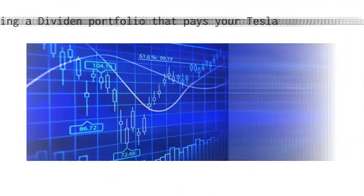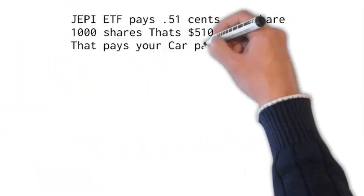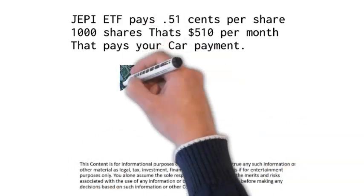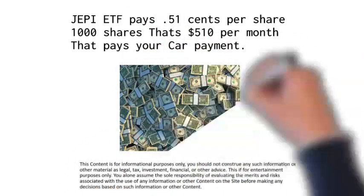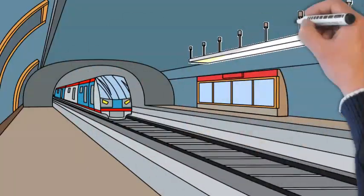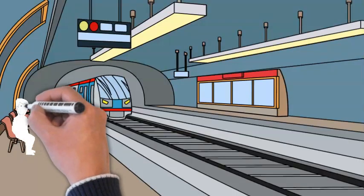Buy my Tesla. For example, JEPI ETF pays 51 cents per share. If you buy a thousand shares, that's $510 per month. That pays your car payment. Now building a foundation is key to having your money work for you.